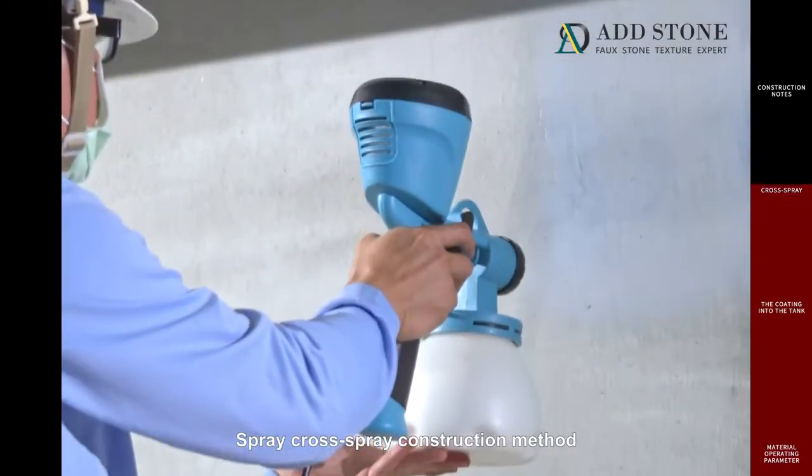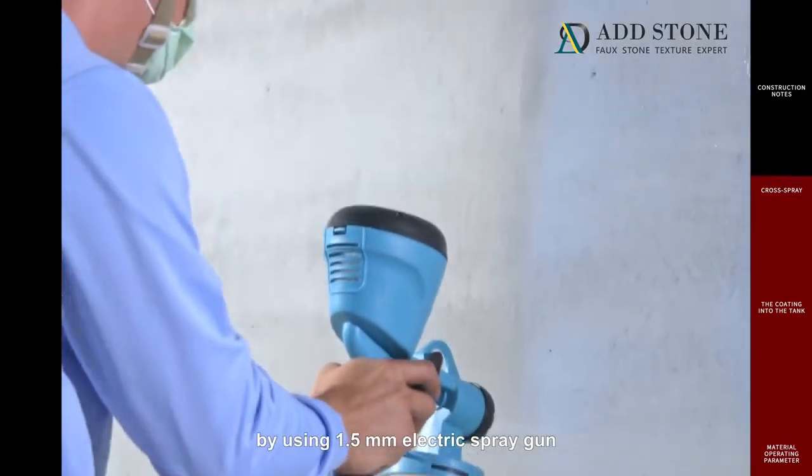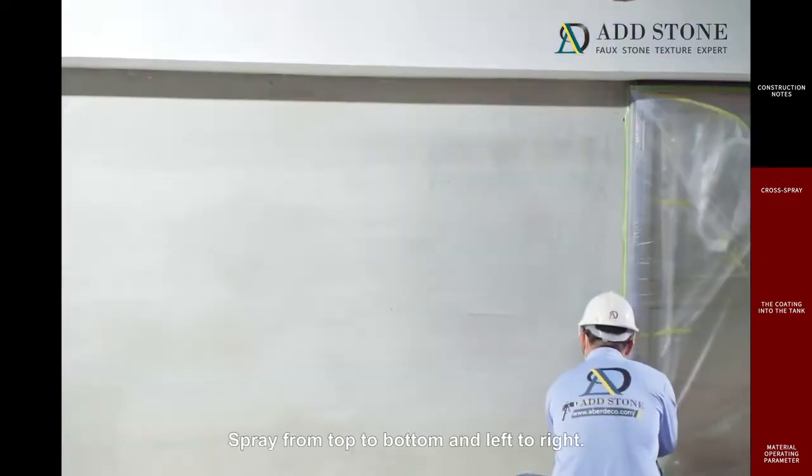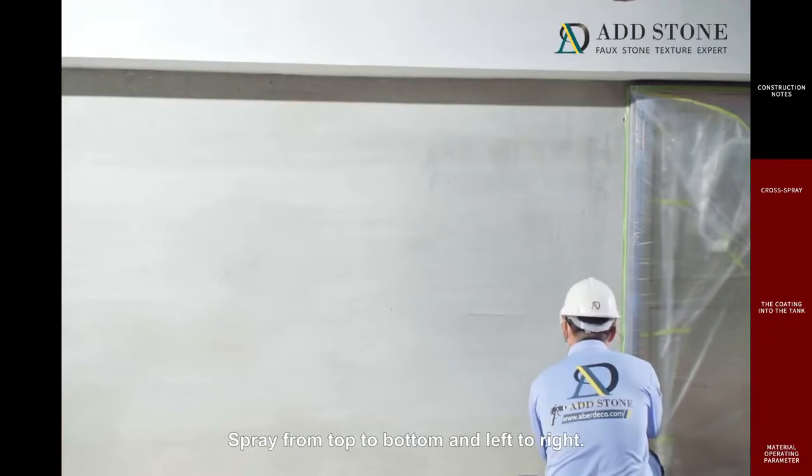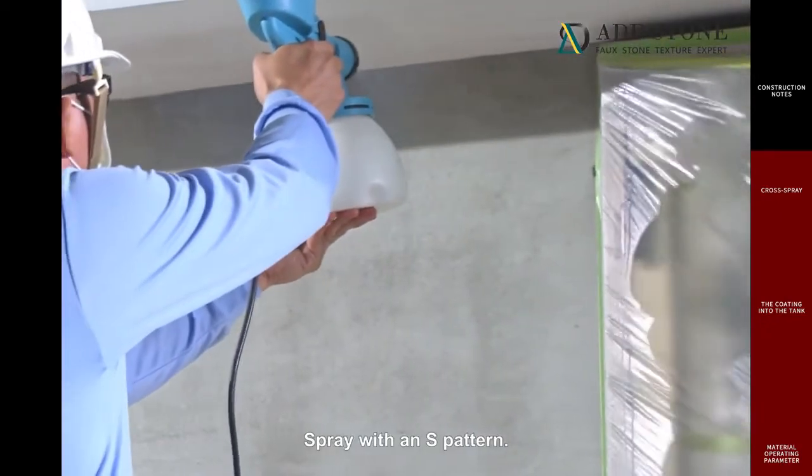Spray cross-spray construction method by using 1.5 mm electric spray gun. Spray from top to bottom and left to right. Spray with an S-pattern.